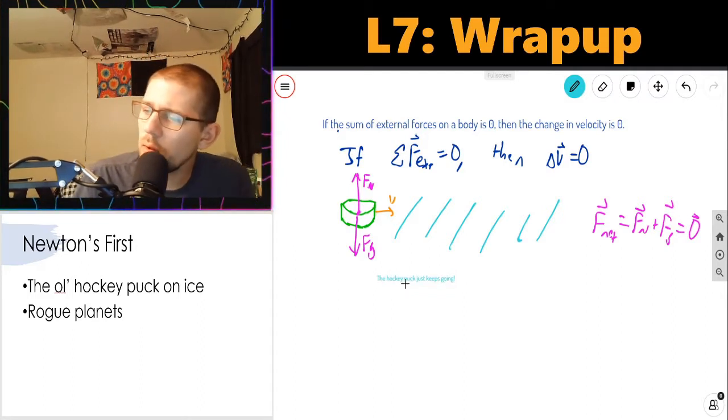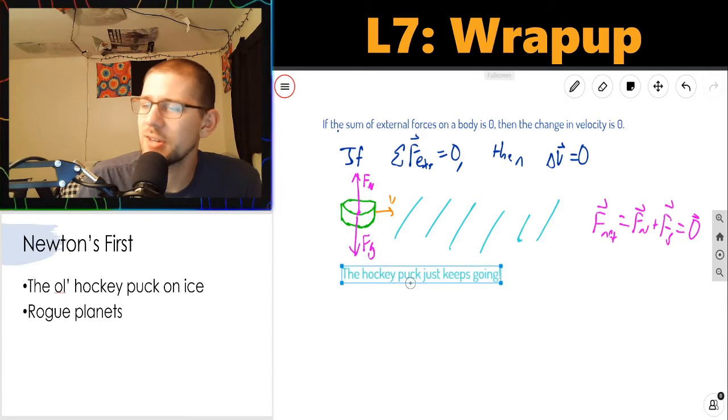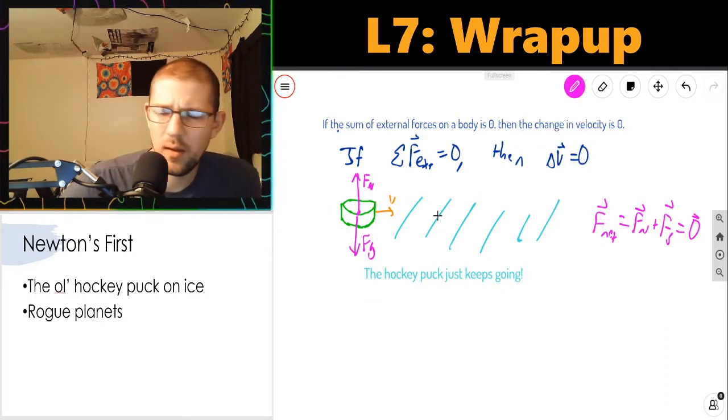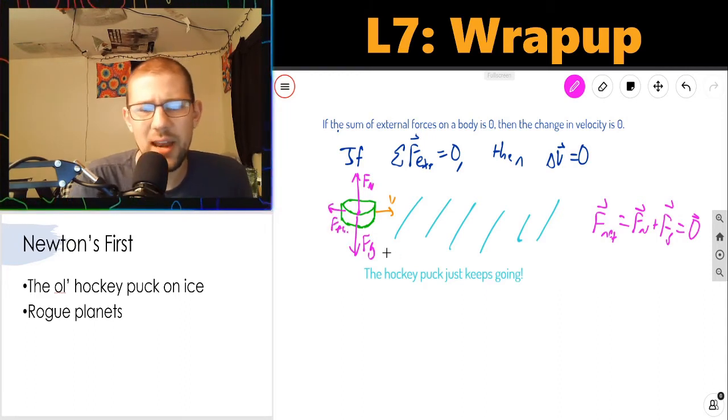And my net force, F net, which is the sum of those two forces, the normal force plus the gravitational force, those two things sum to zero, the zero vector. So there is no net force, which means that my hockey puck will just keep going at a constant velocity as long as it can. The hockey puck just keeps going.